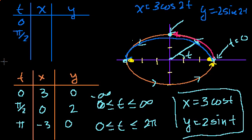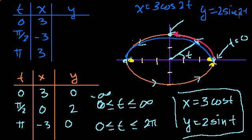When t is 0: cosine of 2 times 0 is cosine of 0, which is 1, times 3 gives x = 3. When t is pi over 2: 2 times pi over 2 is pi, cosine of pi is minus 1, times 3 gives x = minus 3. When t is pi: cosine of 2pi equals cosine of 0 equals 1, times 3 gives x = 3. For y: sine of 0 is 0, times 2 is 0. Sine of pi is 0, times 2 is 0. Sine of 2pi is also 0. So we get a bunch of zeros for y.